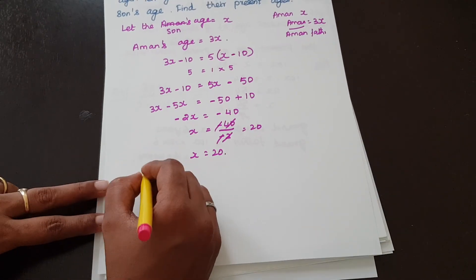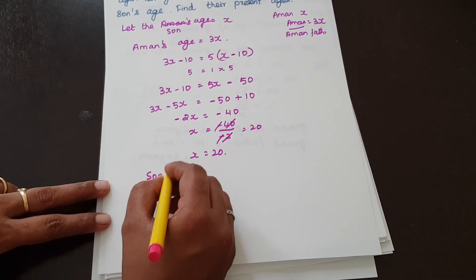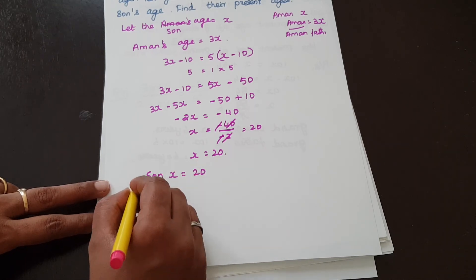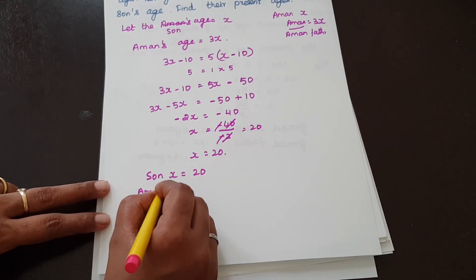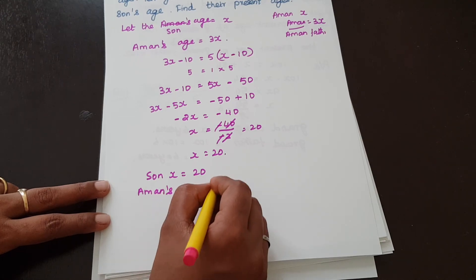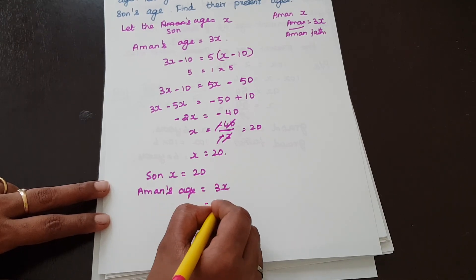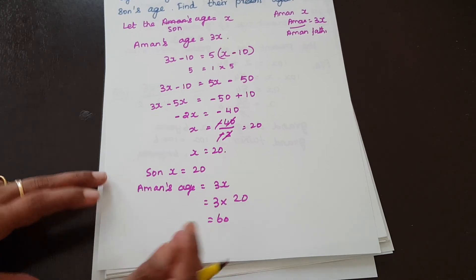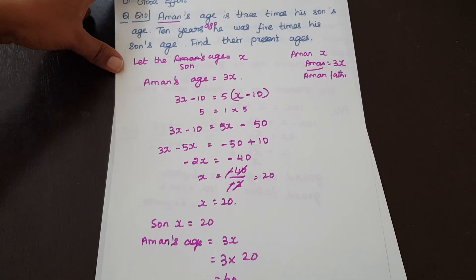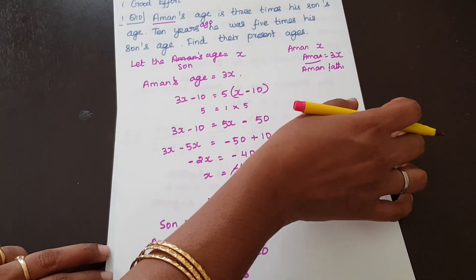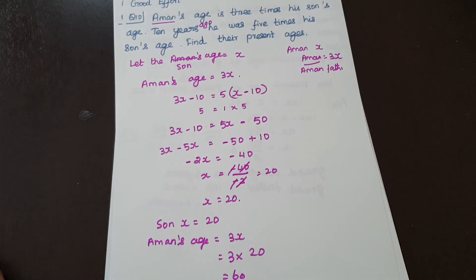Aman's age is 3X so 3 × 20 = 60 years. Exercise 2.4 is complete. Thank you so much for watching this channel. Please subscribe, share, and comment.